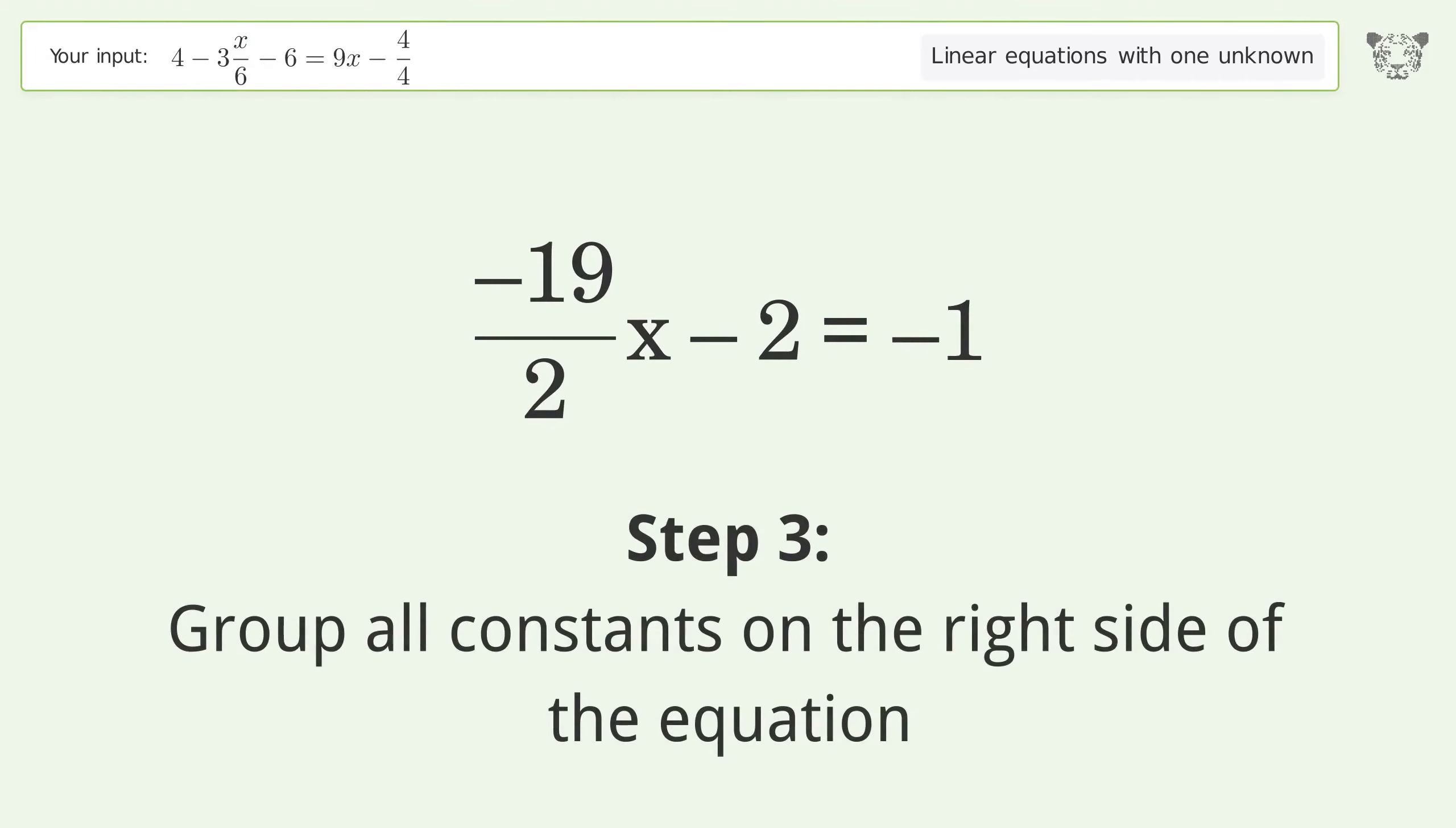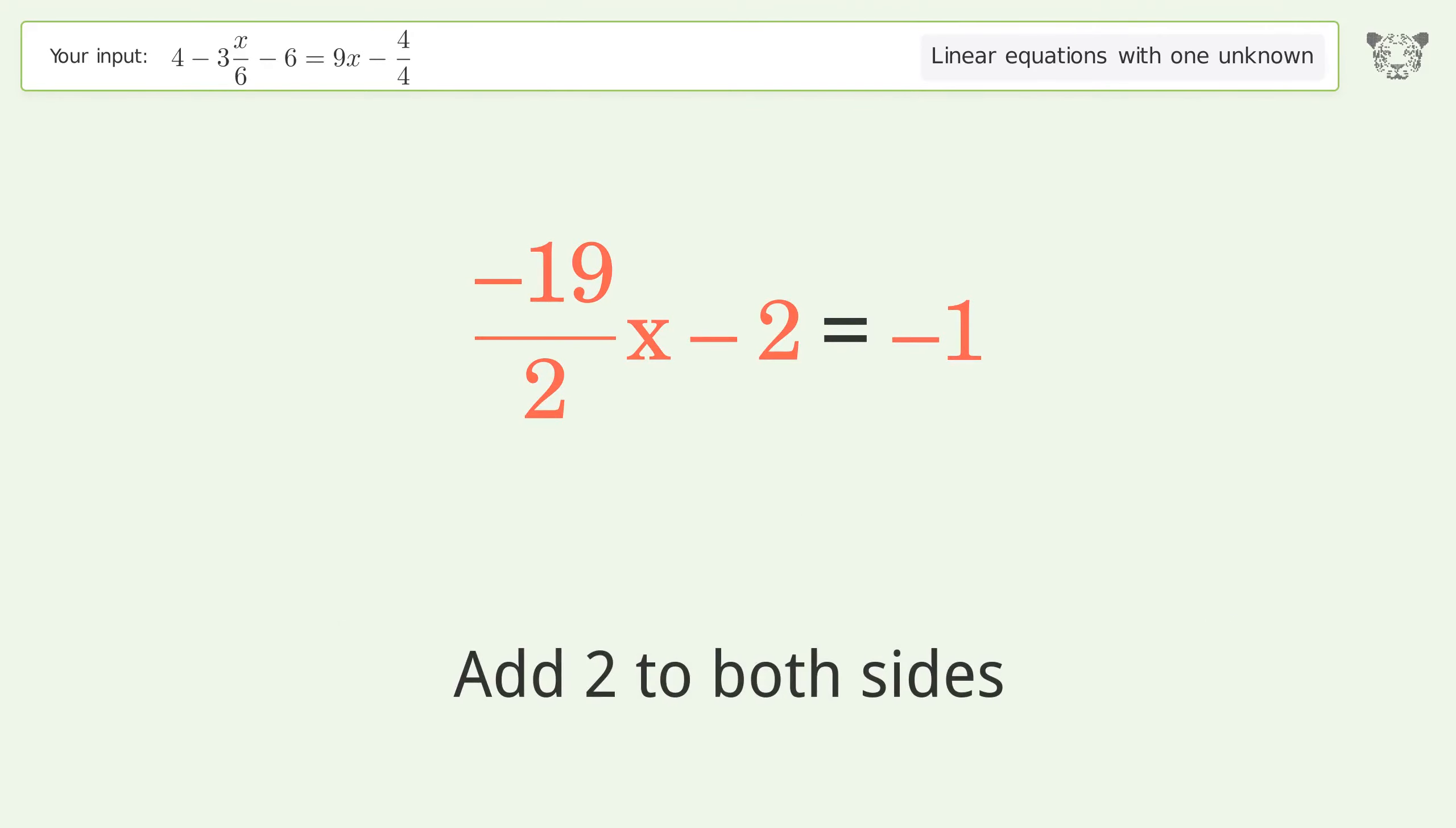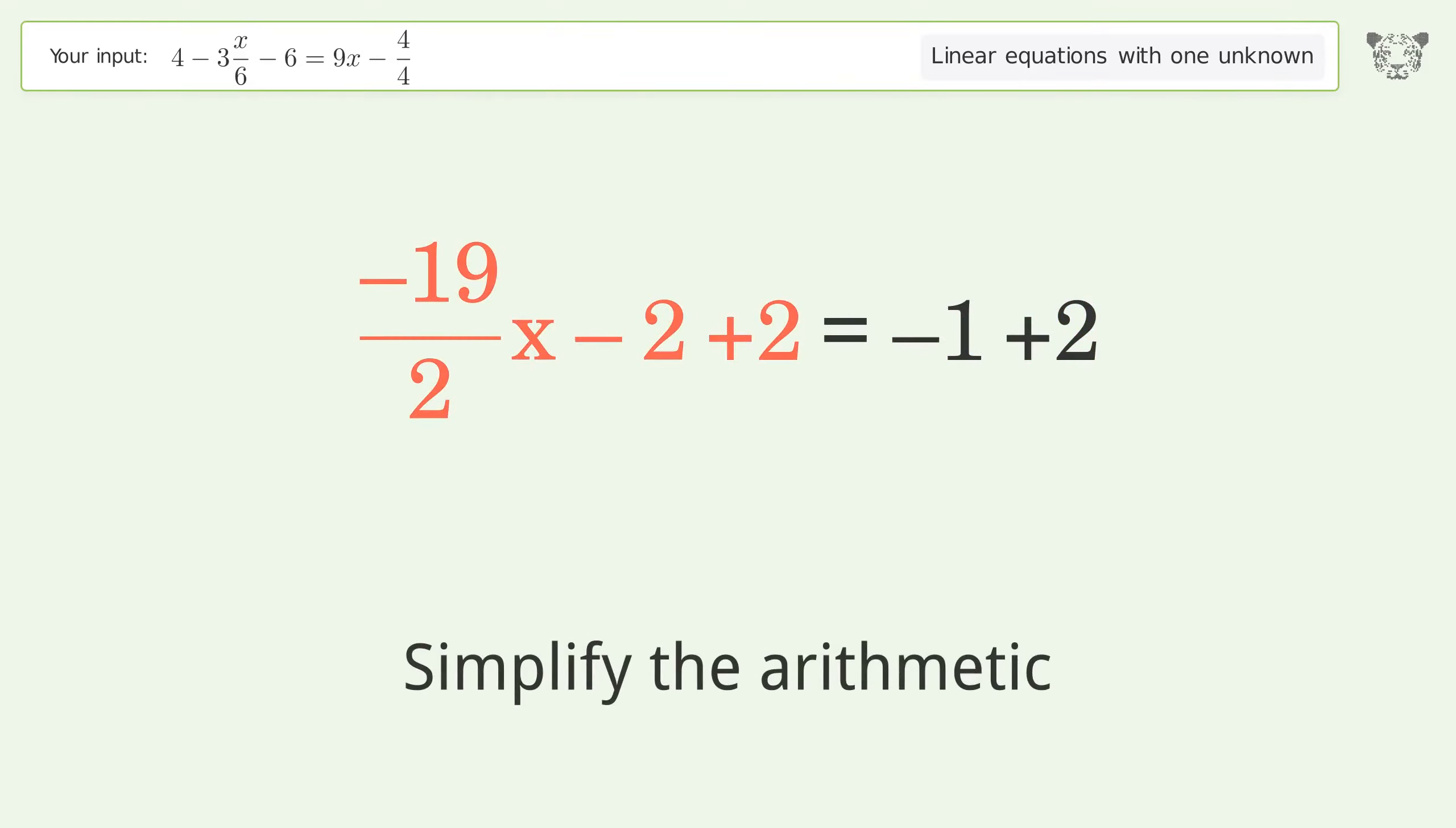Group all constants on the right side of the equation. Add 2 to both sides. Simplify the arithmetic.